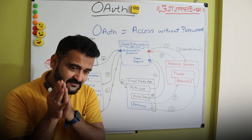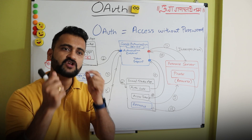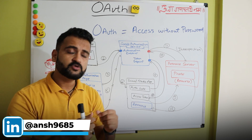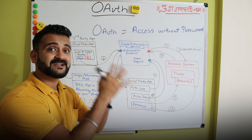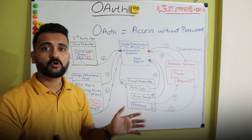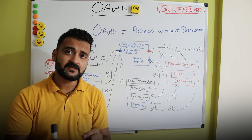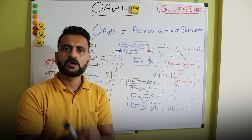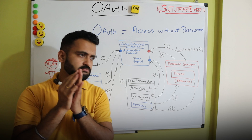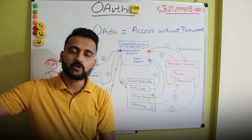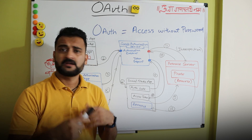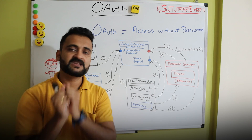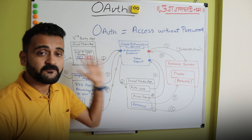OAuth is special because it democratizes your whole authorization system. You don't have to build your own — you can simply authenticate and authorize a user and get access to their resources using the OAuth protocol. Because it's an open standard, whether it's Google, Amazon, or Azure, any application can simply use OAuth to get authorization. That's why nowadays, as mentioned at the start of the video, no one sets up their own user ID and password on any app — and that's the magic of OAuth.